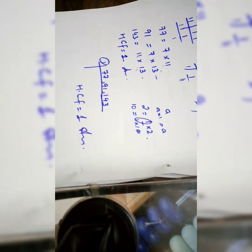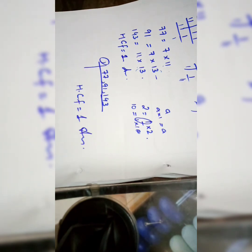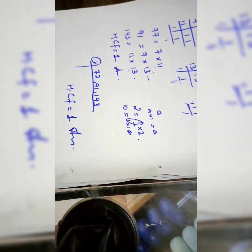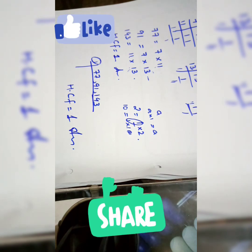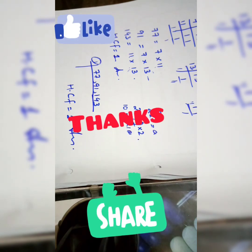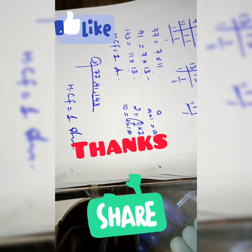That is all about Question 1 of Exercise 1B, covering HCF using both the table method and listing method. There are no limitations in the exercise on which method to use. I have solved all four parts with both methods. Kindly subscribe to the channel, press the bell icon, and also press the like button.